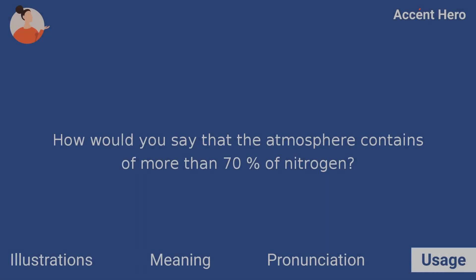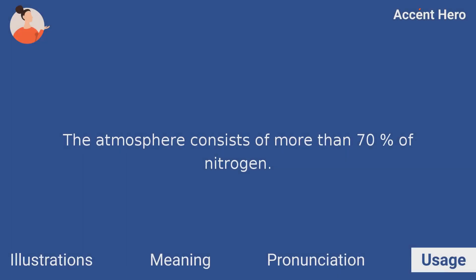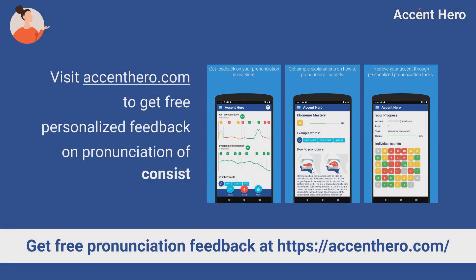Quiz: How would you say that the atmosphere contains more than 70% of nitrogen? The atmosphere consists of more than 70% of nitrogen. Visit accenthero.com to get free personalized feedback on pronunciation of 'consist.'